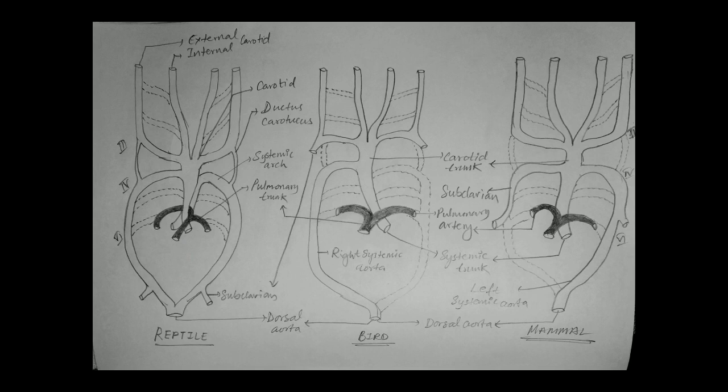The major points to remember about the reptilian arterial system: the right systemic arch, which is the fourth one, arises from the left ventricle — as you can see in the diagram. It carries oxygenated blood to the carotid arch, and the carotid arch generally carries that oxygenated blood to the head part of the body.